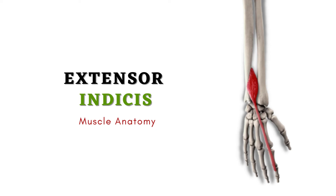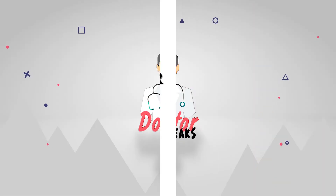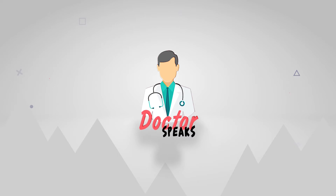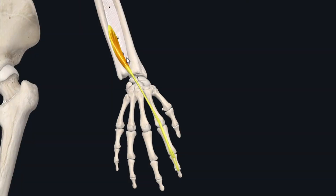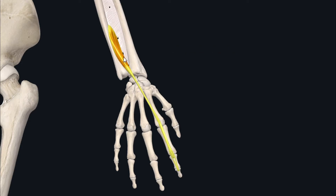Hello everyone, welcome back. Today we will talk about the anatomy of the extensor indicis muscle. The extensor indicis muscle is a short fusiform type of skeletal muscle found in the posterior or extensor compartment of the forearm, and it is one of the deep muscles of the posterior compartment of the forearm.